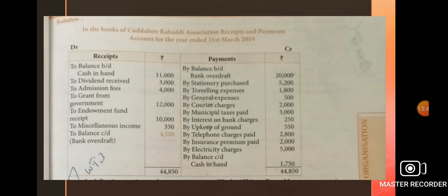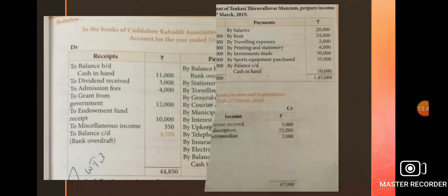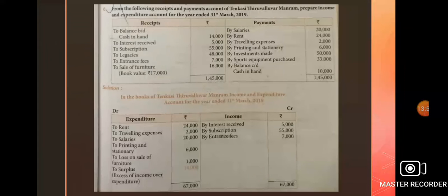Comparing debit and credit sides: debit side total 40,350; credit side total 44,850. The difference of 4,500 is known as the closing balance of bank overdraft. This is the answer for question number 5.